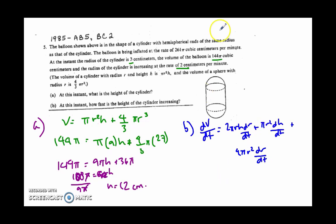Now they gave us a lot of information to sub in. We know that dv dt is 261 pi. We know that r is 3. We know that h is 12. And we know that dr dt is 2.